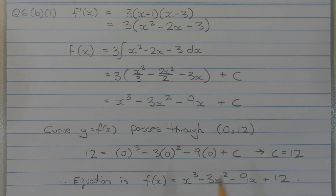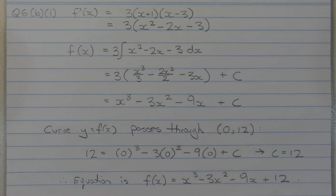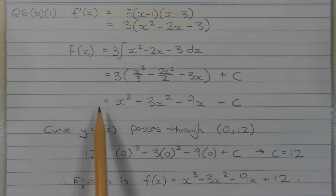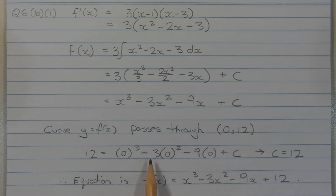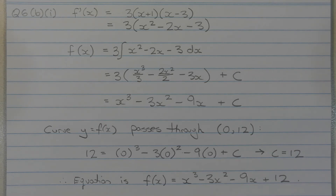The final step is to determine the value of the constant of integration. We know that the curve y equals f(x) passes through the point (0, 12), meaning when x equals 0, y equals 12. Substituting x equals 0 into f(x), we get 12 equals 0 cubed minus 3 times 0 squared minus 9 times 0 plus c. Therefore c equals 12, and the equation is f(x) equals x cubed minus 3x squared minus 9x plus 12.